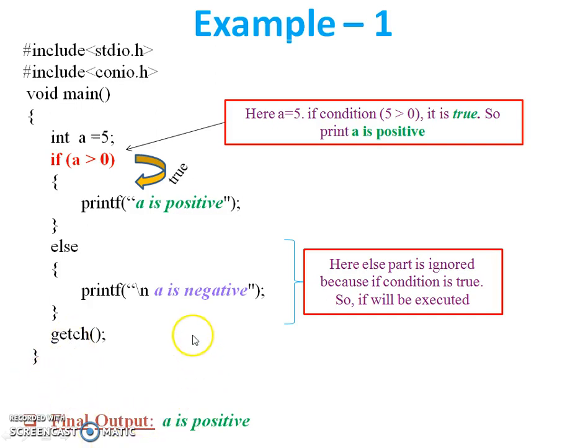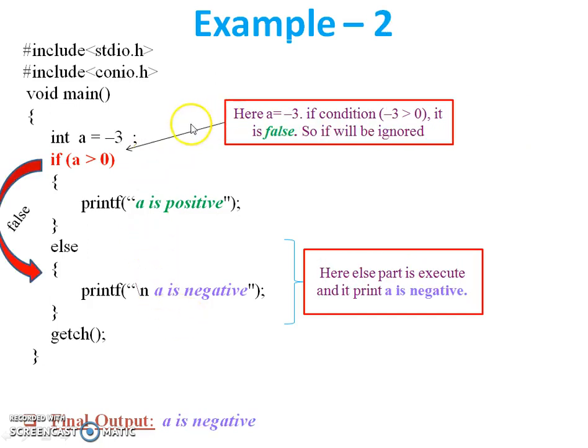In example 2, the value of a equals minus 3. Now check the condition: if a greater than 0. The value of a is minus 3. Minus 3 greater than 0? Condition is false, so directly jump to the else part. The if part will be ignored. Printf 'a is negative'. Final output is 'a is negative'.